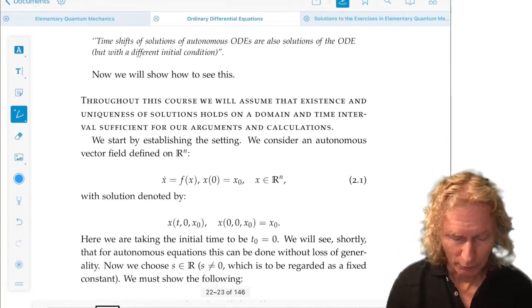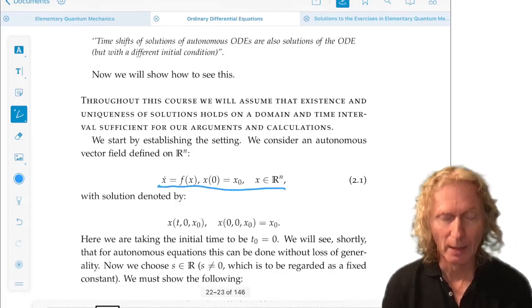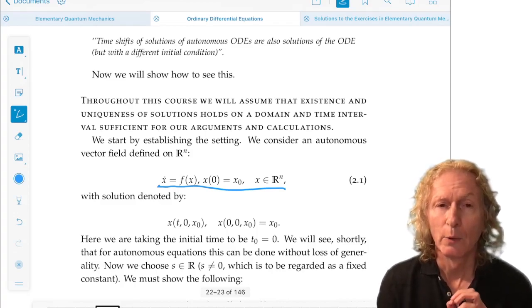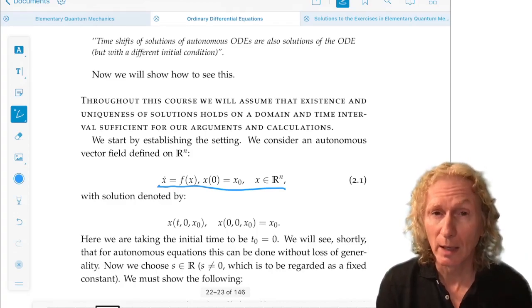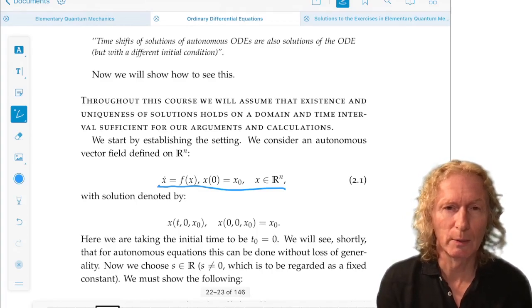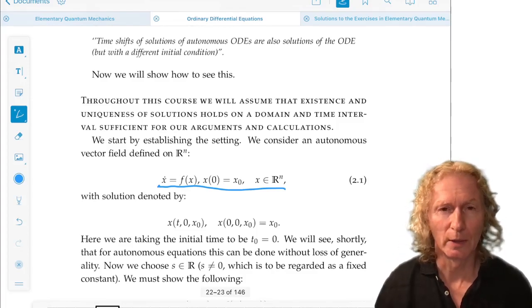Okay, so we're going to consider autonomous ODEs: x dot equals f of x, x in R^n, the general case, with initial condition x at time 0 equals x_0. We're going to take the initial time to be 0 and we can worry about how general that is later on.